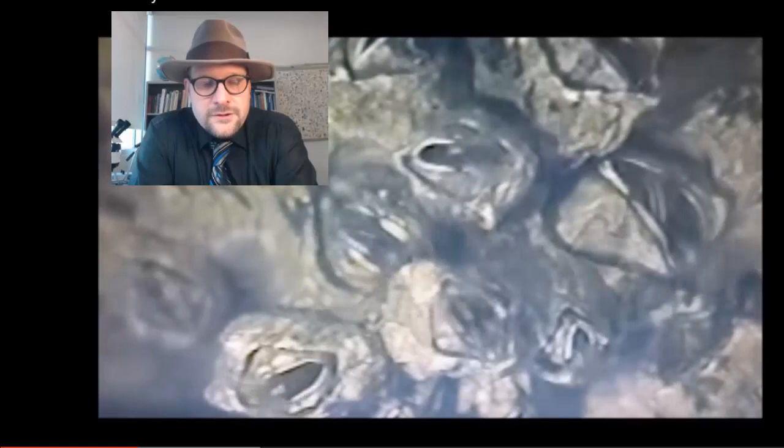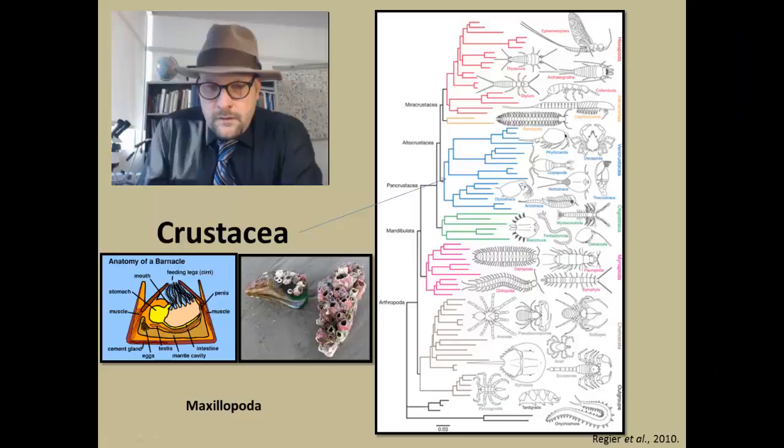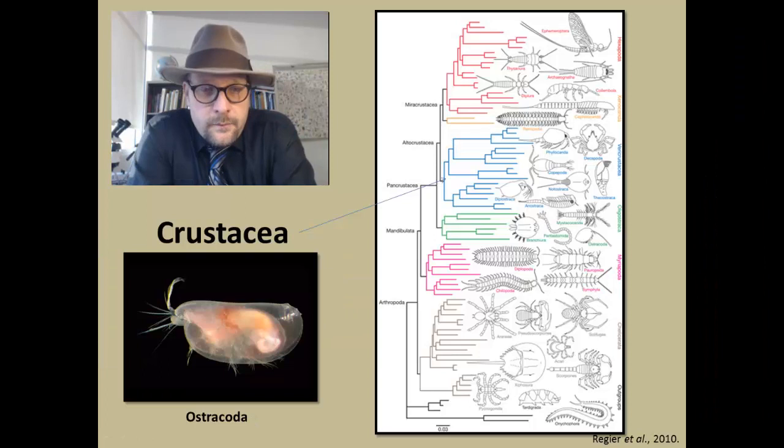This video here shows some barnacles that are actually feeding, and you can see how they are using their feet to sweep the water and catch food and bring it down into their little shelled structures there. So they send out their feet like this, and their little mouth is grabbing hold of things as they are feeding. So this is an example of an arthropod that has become a sessile organism.